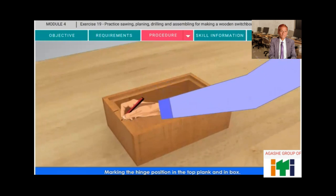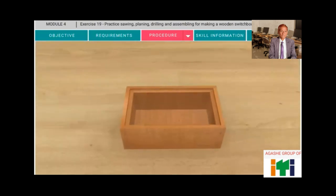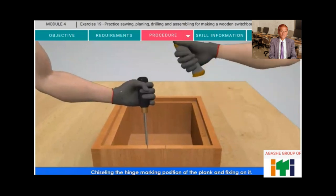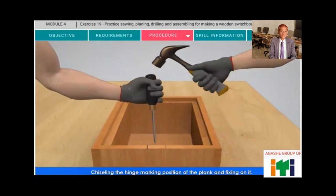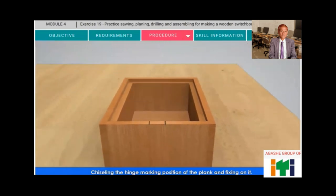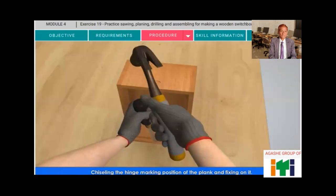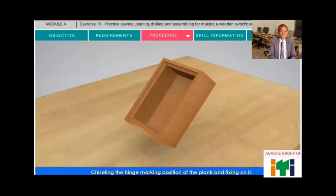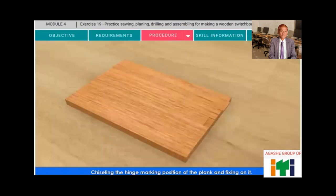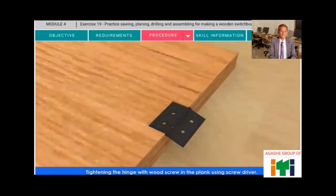Marking the hinge position in the top plank and in box. Just like the hinge marking position of the plank and fix it on it. Tightening the hinge with wood screw in the plank using screwdriver.